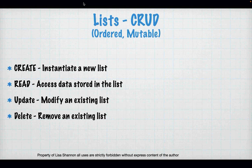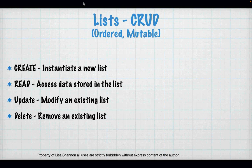Lists are ordered and mutable — those are the two things you really have to think about. Mutable means you can change it. Strings, although we talk about them as if they're lists, are not mutable. With lists, because they are mutable, you can just pull one thing out and replace it without creating a whole new data structure.